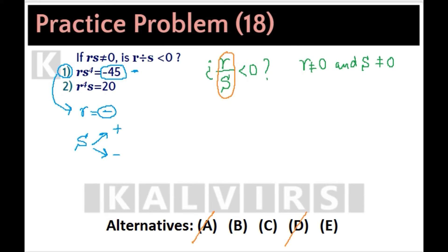From statement 2: R to the 4th power times S is a positive number. Therefore, S must be a positive number. However, we don't know anything about R — R might be either positive or negative. So statement 2 alone is not sufficient. Alternative B is eliminated.